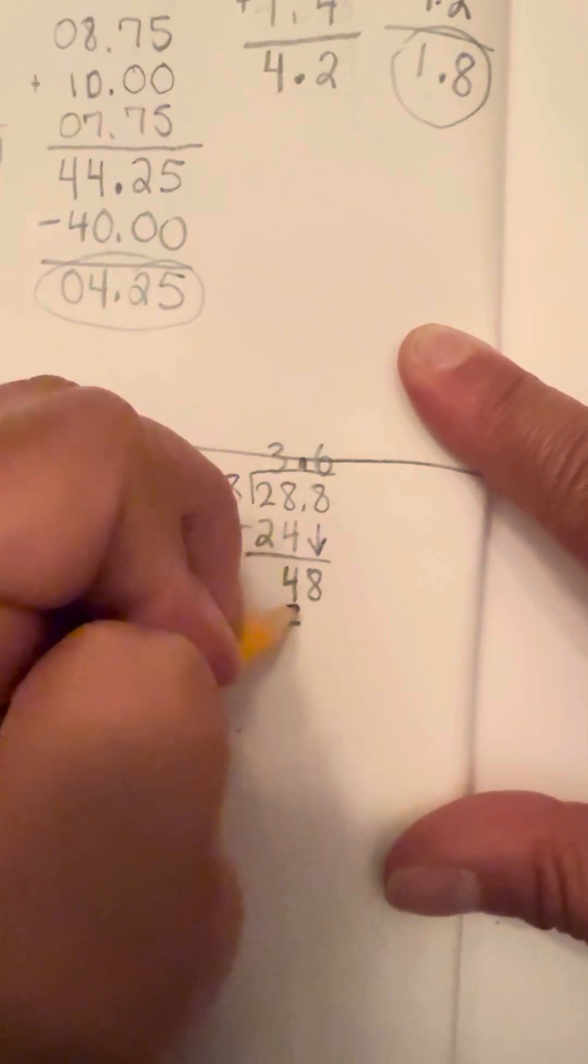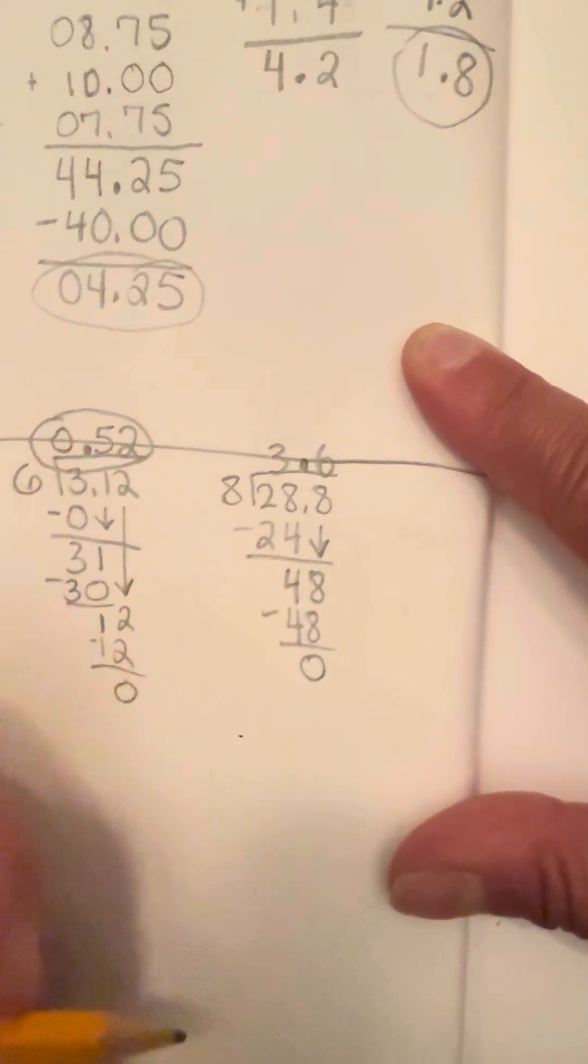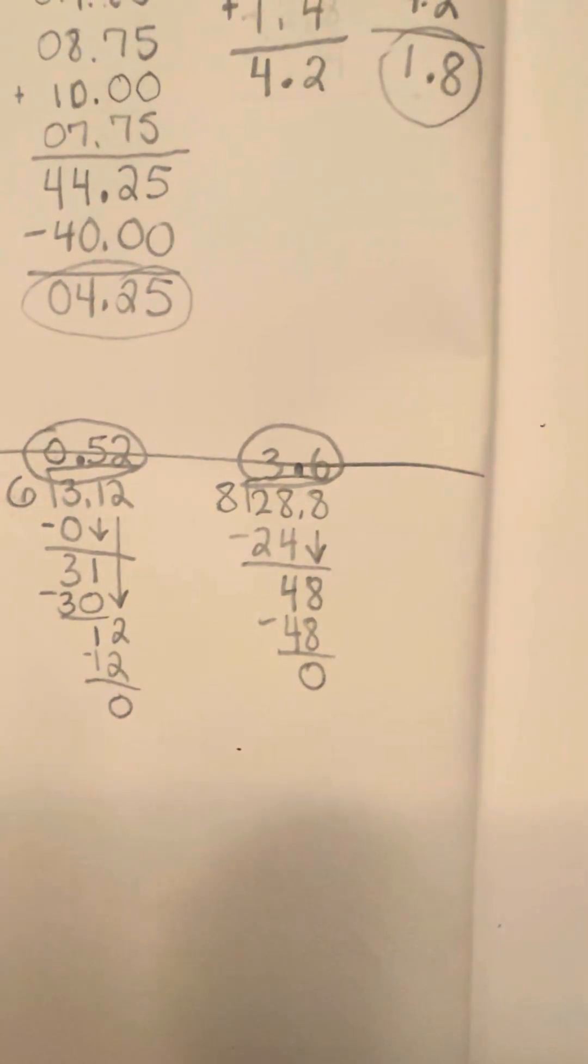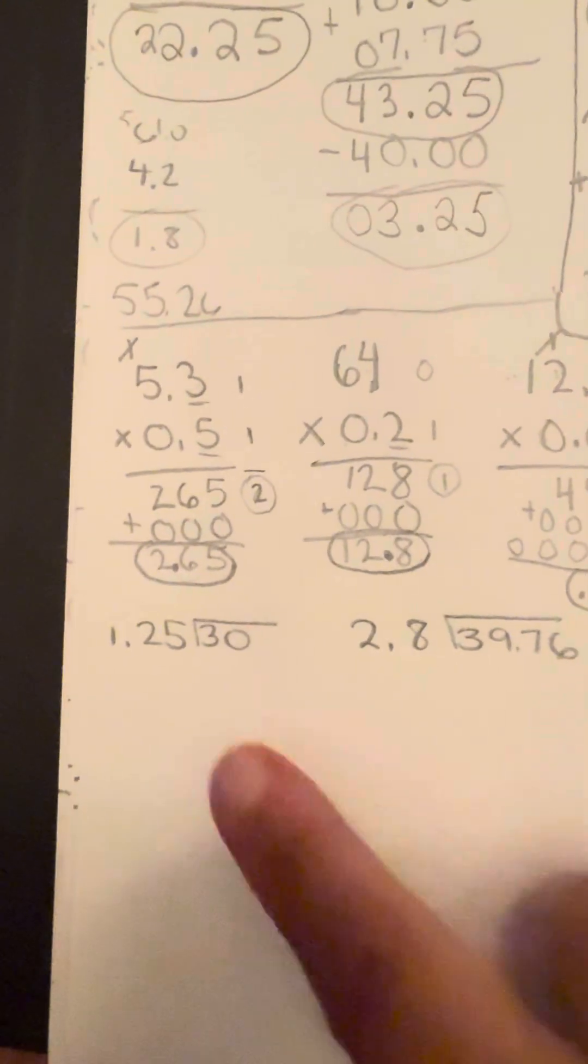Nice and even. No remainders because 48 minus 48 is zero. So 3.6 would be your finalized answer. Now, what happens when we have decimals over here like this?